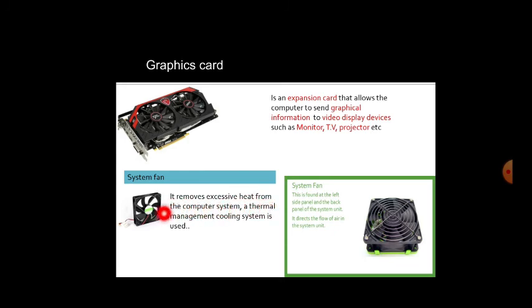The system fan removes excessive heat from the computer system — it is part of the thermal management cooling system. The CPU can get heated up, which may damage devices, so the fan is essential. It is found on the left side panel and back panel of the system unit, directs airflow, and cools down the CPU so all devices can run easily.